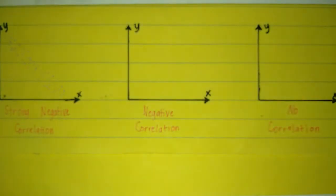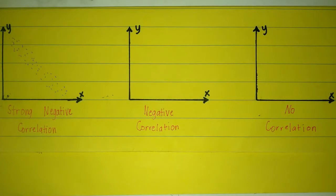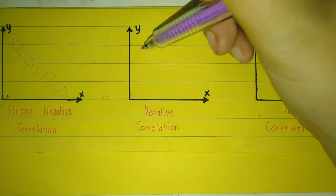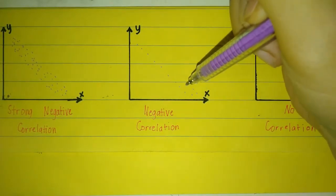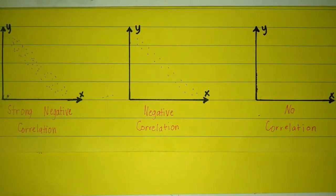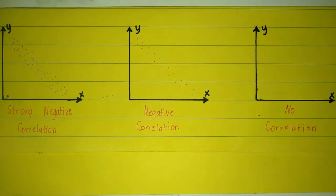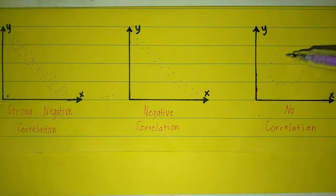Strong negative correlation indicates a strong connection between the two variables, but one goes up whenever the other one goes down. Negative correlation is a relationship between two variables in which one variable increases as the other decreases and vice versa. Zero or no correlation exists when there is no relationship between two variables.